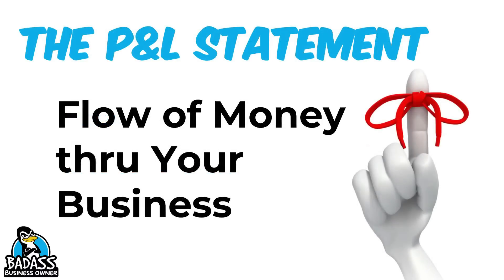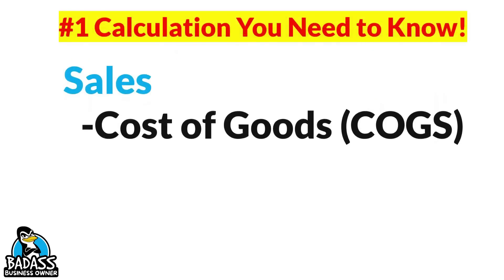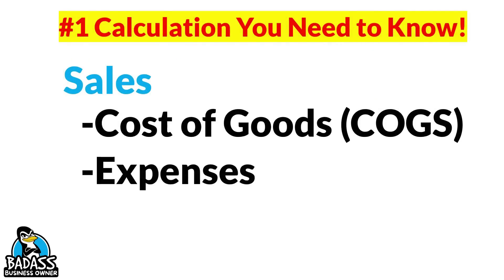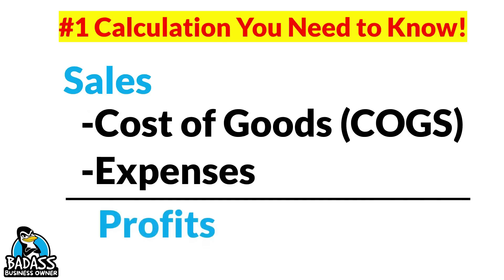Your P&L statement is basically the flow of money through your business. We started off with sales, then we went to cost of goods, then we took off the expenses, and finally we ended up with our profits. This is the number one calculation: sales minus cost of goods minus expenses equals profits. You'll notice this is how the flow of your P&L goes. The gross margin line is only telling you a snapshot between the sales and the cost of goods. The reason to memorize sales minus cost of goods minus expenses equals profits is those are the big buckets of where money is coming out of the business as it flows through.